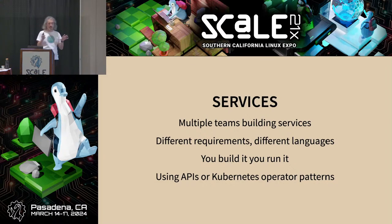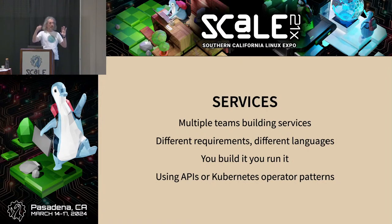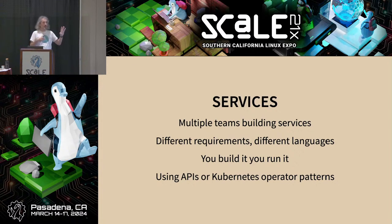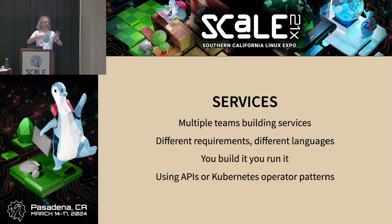The model we follow is API patterns and operator patterns, where we build operators that do actions on clusters and environments. The operator pattern in Kubernetes is about managing state: you create a custom resource definition, then an operator — a service continuously running and monitoring those custom resources — checks the desired state and reconciles. For example, the Helm operator creates an object defining which chart to install in which namespace, and the operator always checks: is this installed? Has it changed? So it keeps things synchronized.